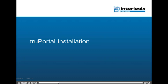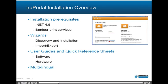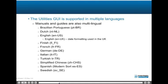This topic will outline the TruePortal installation overview. Installation prerequisites require that .NET 4.5 and Bonjour print services be installed. Wizards include the Discovery and Installation wizard and the Import-Export wizard. Documentation included with the installation includes the software user guide and hardware quick reference sheets. The installation and the utilities graphical user interface support multiple languages, and manuals and guides are also supported in multiple languages.